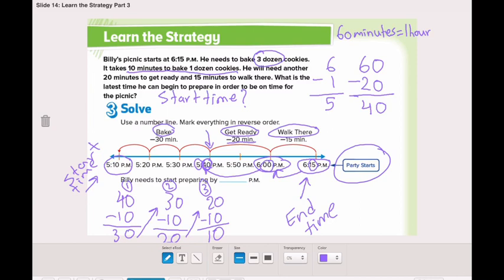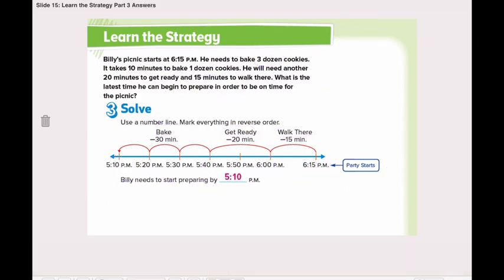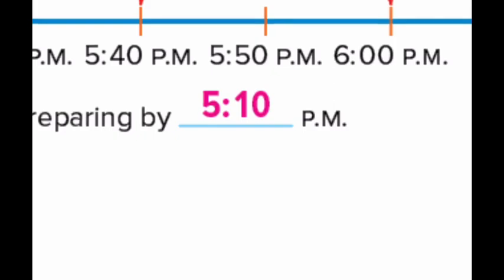Because, when we subtracted, we subtracted from the minutes. We did not take anything from the hours. So, the hours is still 5. And the minutes became 10. It's 5:10 p.m. So, Billy needs to start preparing by 5:10 p.m.